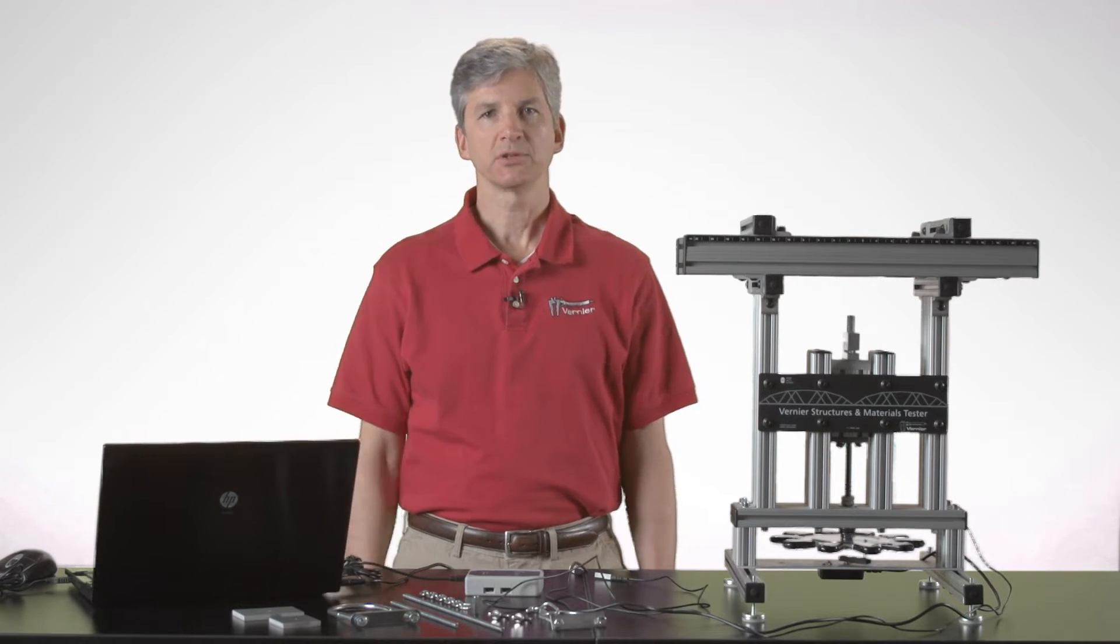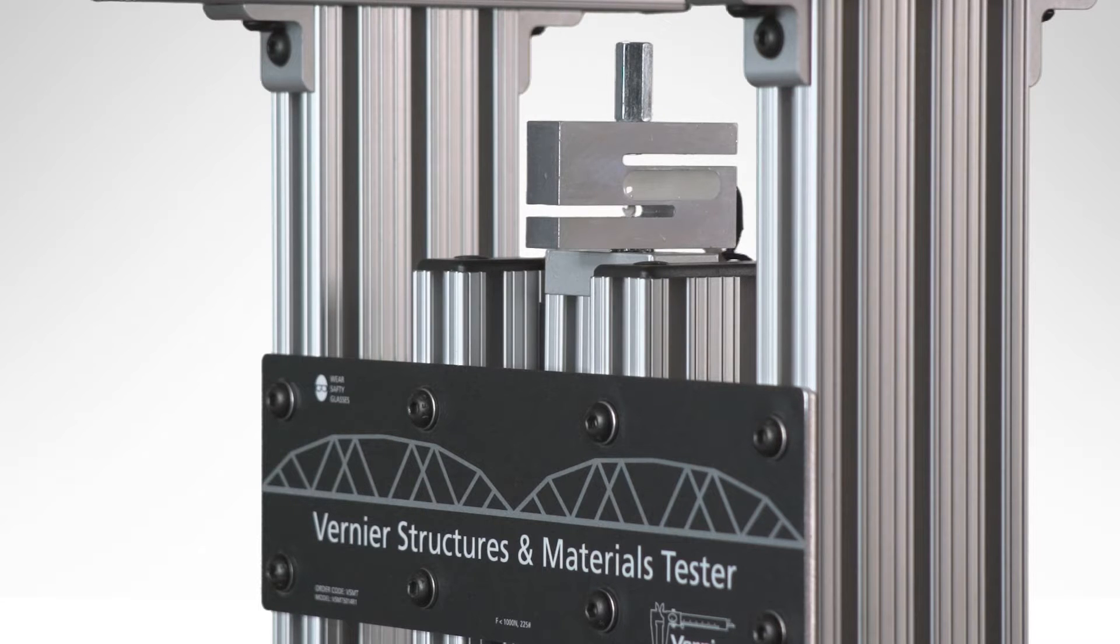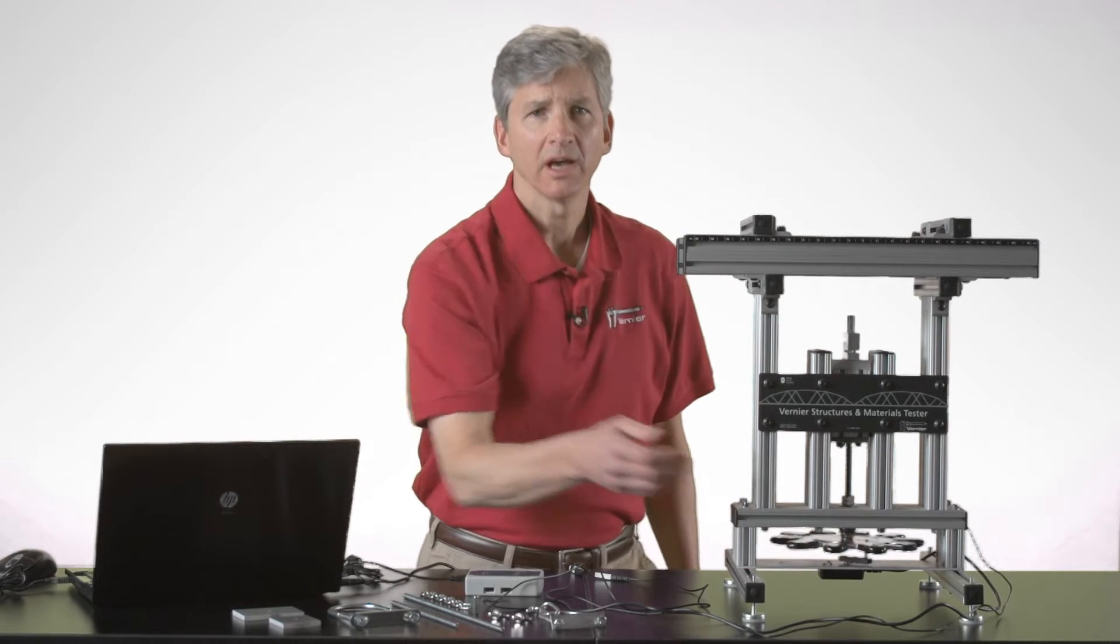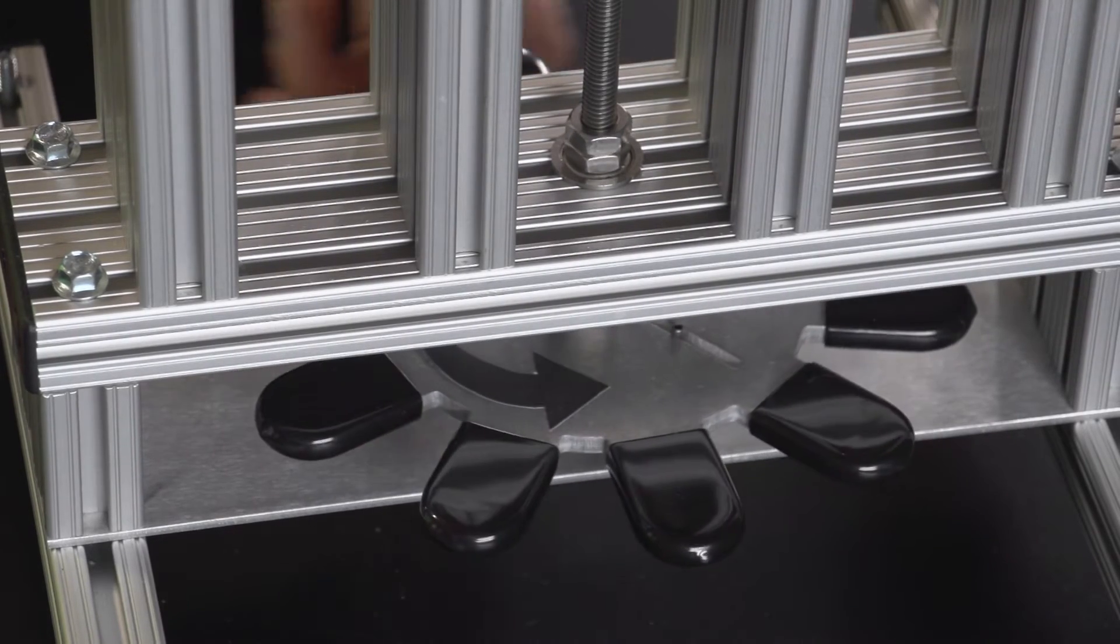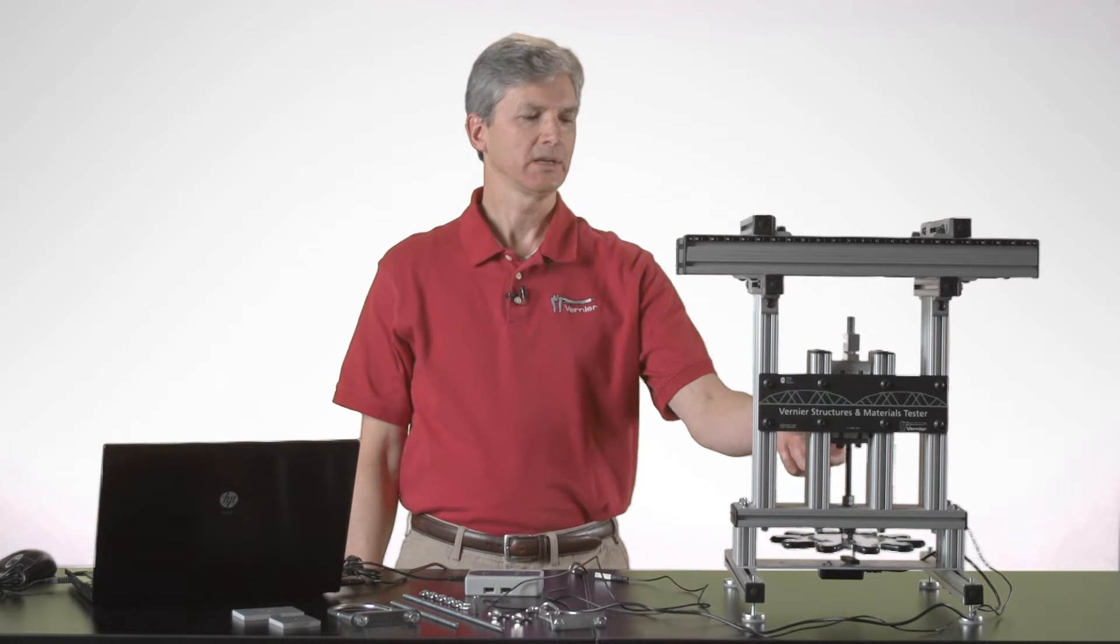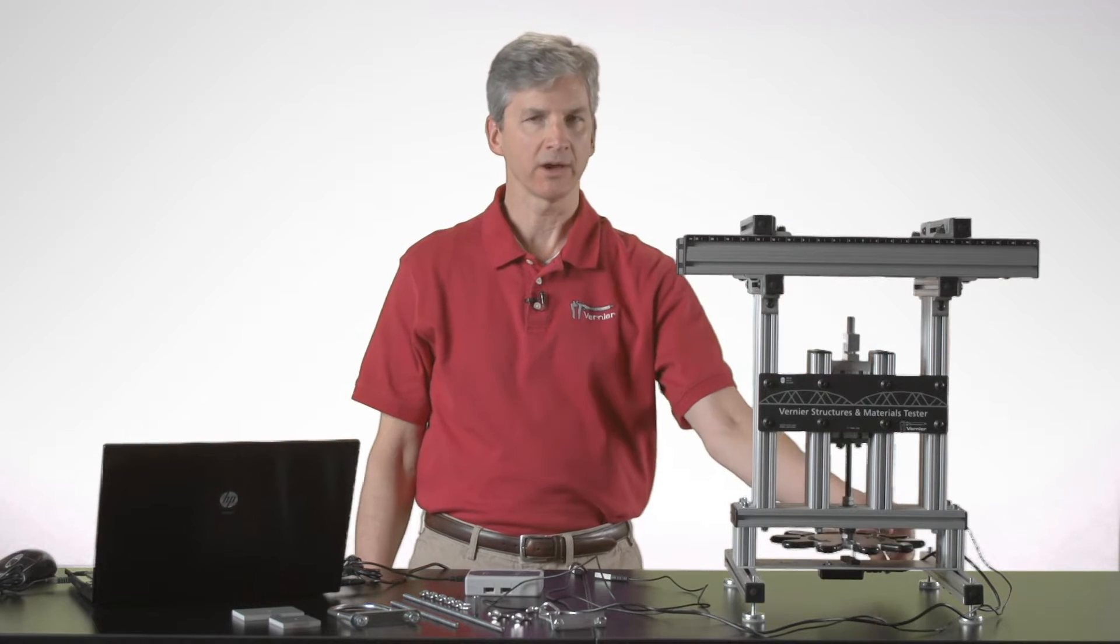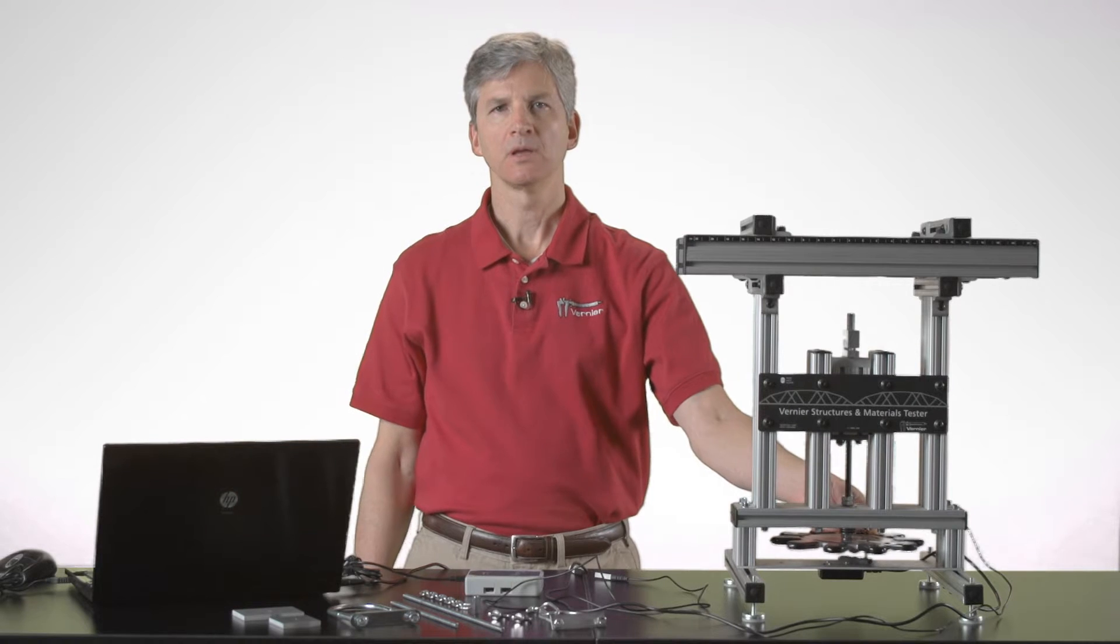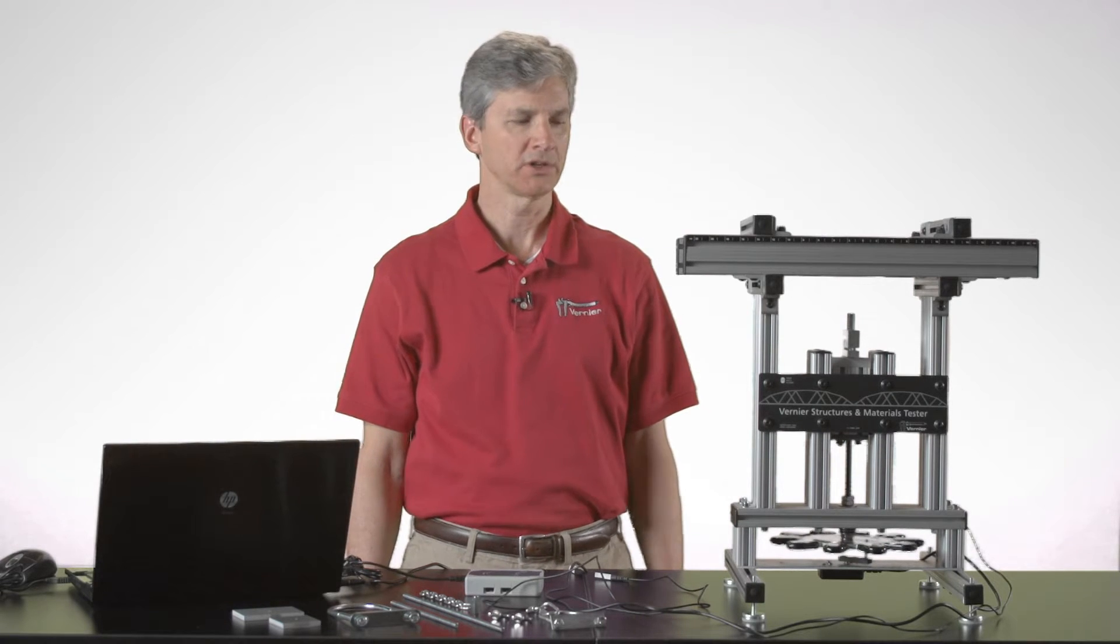The Vernier Structures and Materials Tester has two sensors. It has a force sensor that is a simple strain gauge that allows you to measure forces up to a thousand newtons. The displacement sensor, seen underneath here under this carriage, basically counts as the wheel is turned. So as we rotate the wheel, it's measuring how many rotations it's going around, and it translates that into a vertical translation as the force sensor is pulled down when you rotate the screw. I'll rotate it back up now to get it back up into a starting position. You're able to measure to a tenth of a millimeter for the resolution on the displacement sensor.